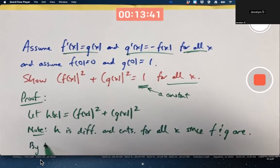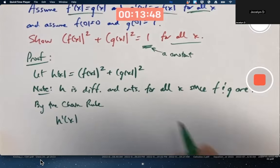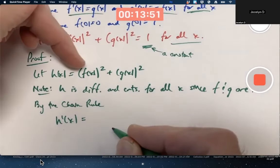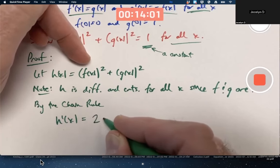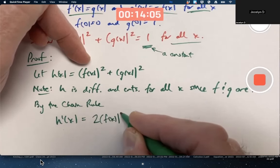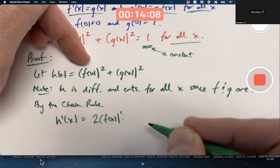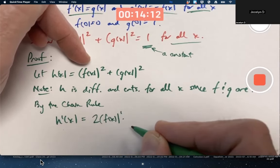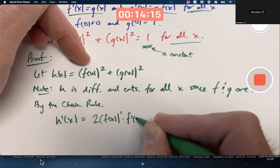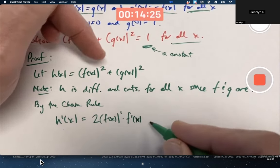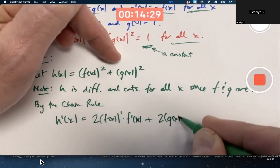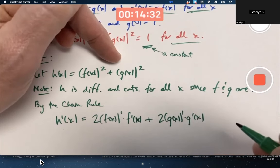By the chain rule, h prime of x equals, careful, I've got to use the chain rule, the derivative of x squared is 2x, right? But that's not an x squared, it's an f of x squared. That's okay. Replace x with f of x. And for extra emphasis, I'll put a first power, though I don't have to, because, right, raising to a first power doesn't change anything. Times with the extra step from the chain rule, the derivative of the inside function is f prime of x. It doesn't matter that I don't know what f and g are, even though, shh, I do, but we're pretending like we don't. Use the chain rule with the next one, 2g of x to the first power times g prime of x. Okay, so what?